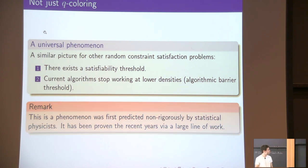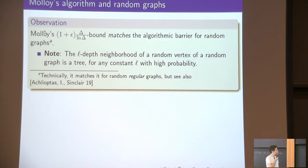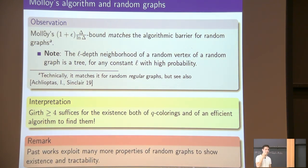The reason I'm telling you all this is that, remarkably, if you apply Molloy's algorithm to random graphs, then it matches the algorithmic barrier in the sense that it works all the way up to the algorithmic barrier for random graphs. And this is quite remarkable because the only assumption Molloy's theorem makes is the absence of triangles, that the girth is at least four, which is quite spectacular in the sense that it characterizes all the tractability, the existence of solution, and the tractability for most sparse random graphs.